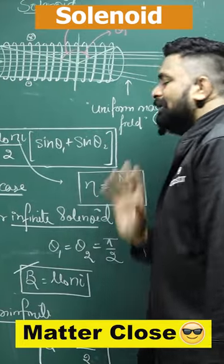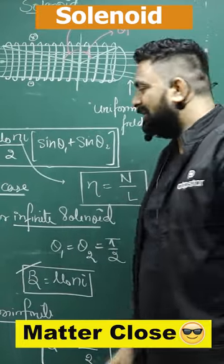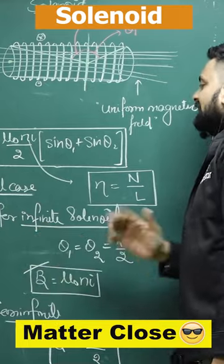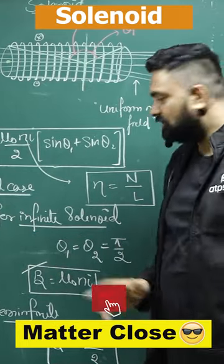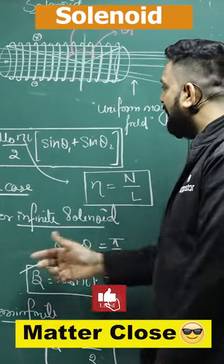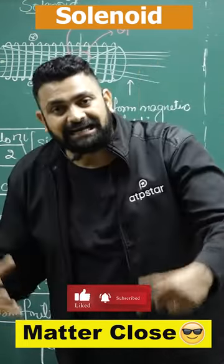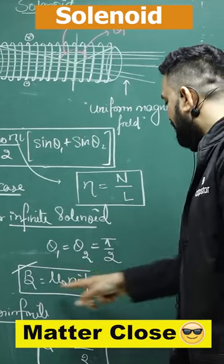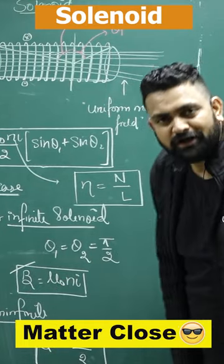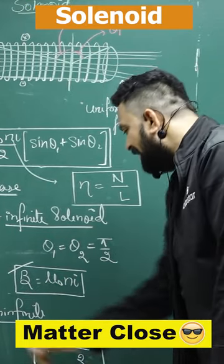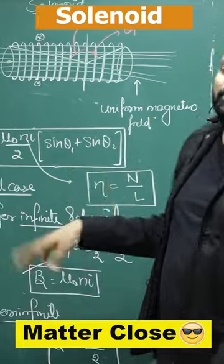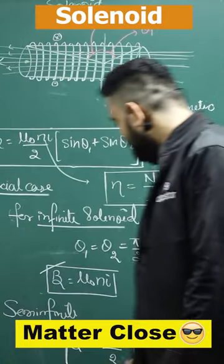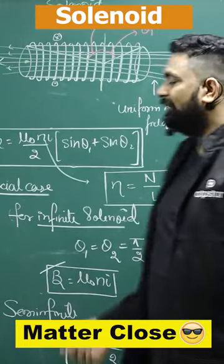So remember sin theta 1 plus sin theta 2. For the special case of an infinite solenoid, theta 1 and theta 2 will both be 90 degrees, the 2's cancel, and the answer will be mu-naught N i. While if it is semi-infinite, one angle is 0 and the other is 90 degrees, and the answer will be mu-naught N i by 2.